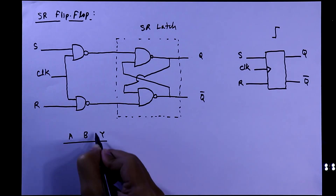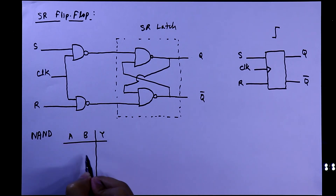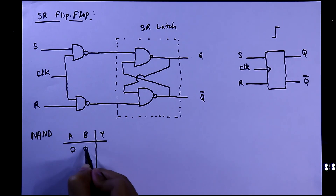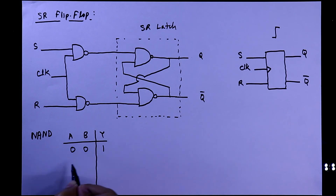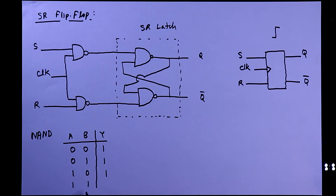The truth table of the NAND gate is: when both inputs are one, then only we will get zero as output.